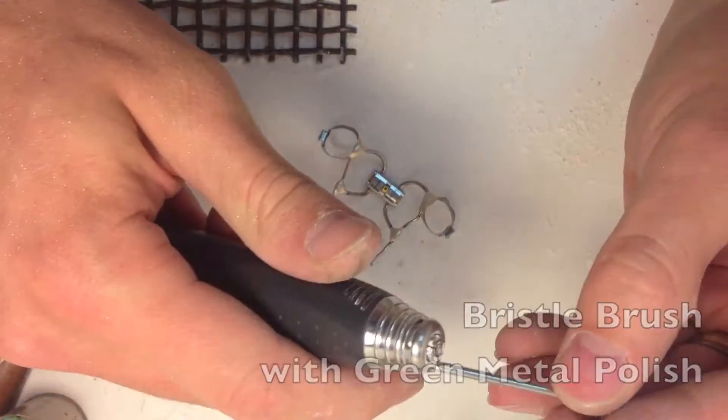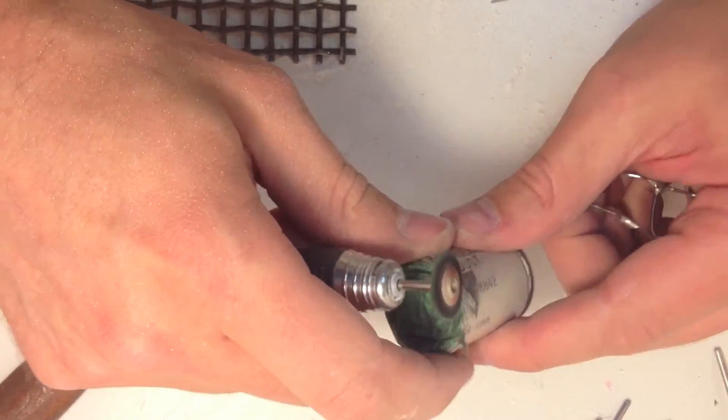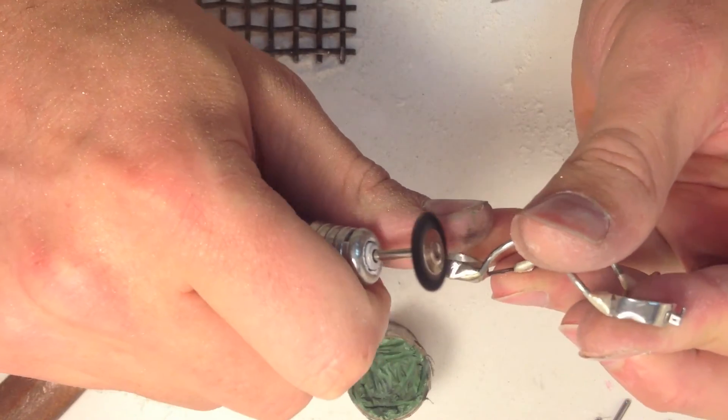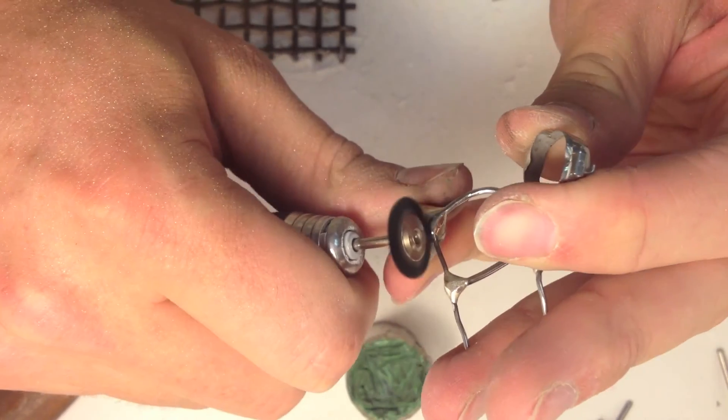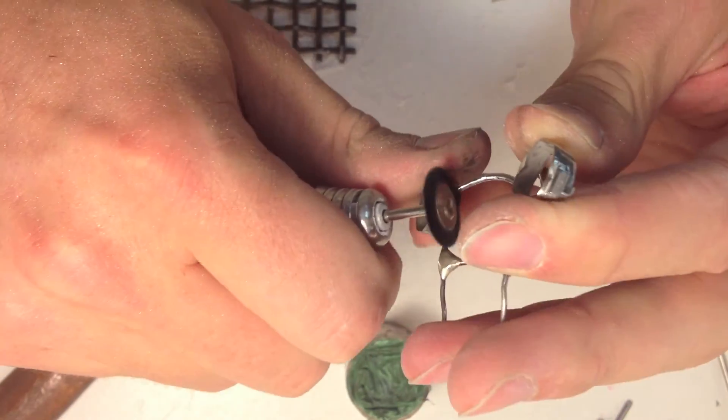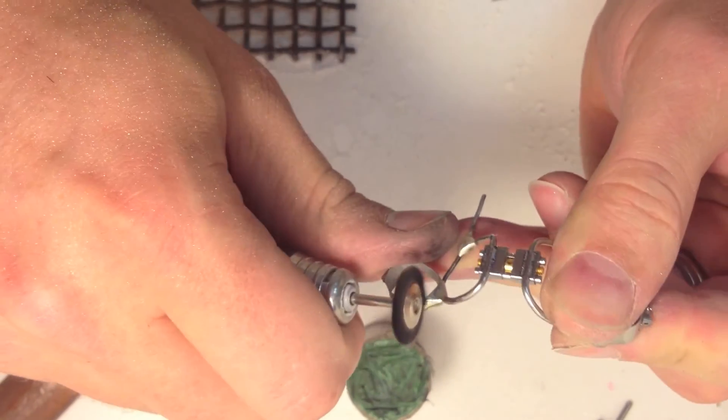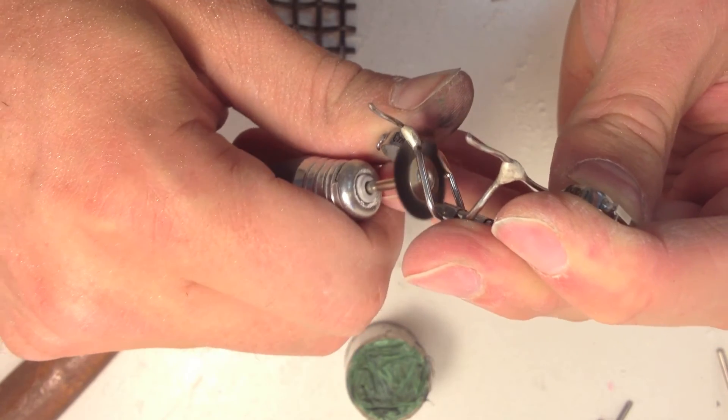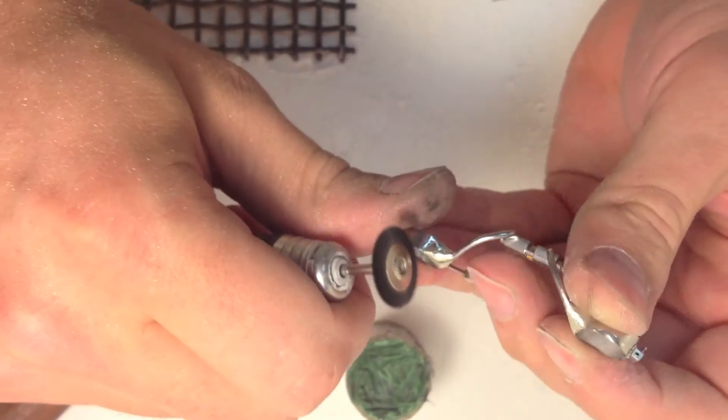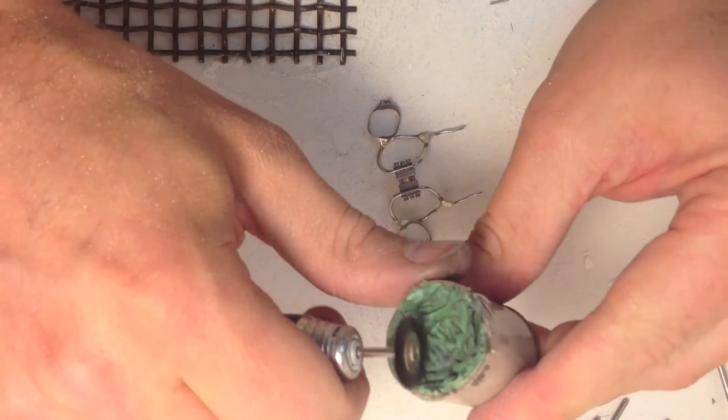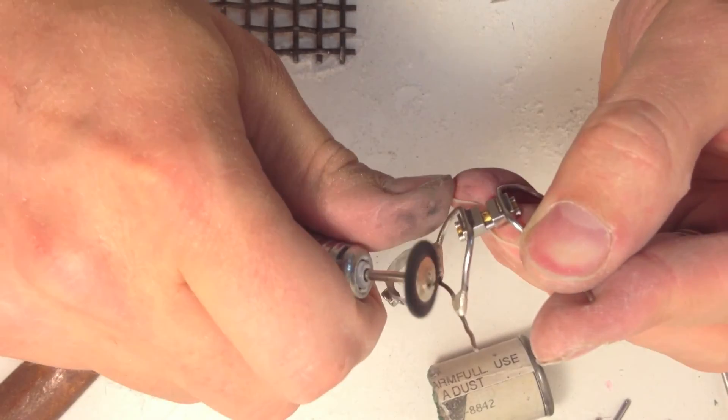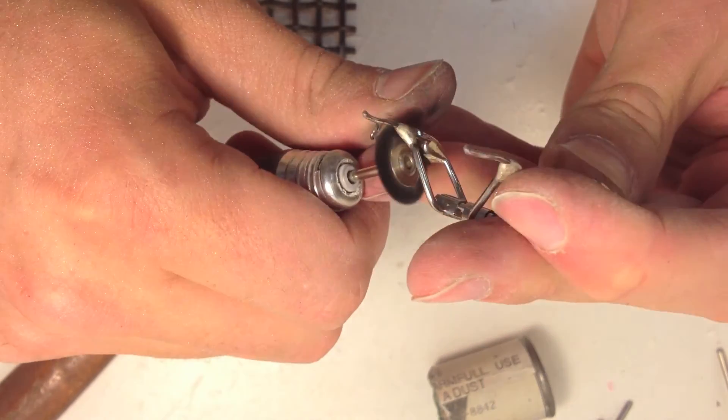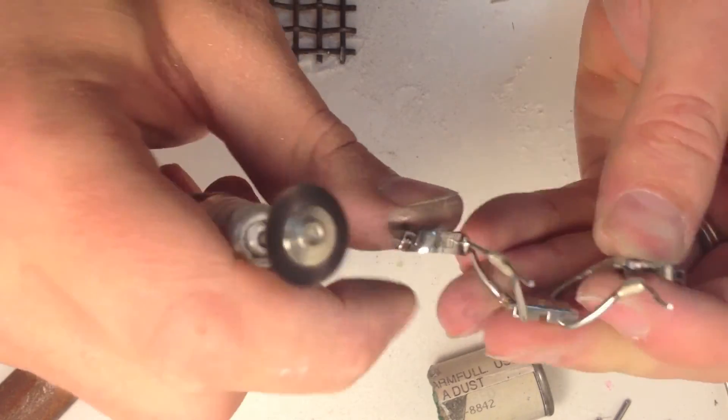This is just a bristle brush. You're going to load some metal polish on here and then just use this back and forth method. Go back and forth a few times. Oops, wrong side. This also shines up the rest of it.